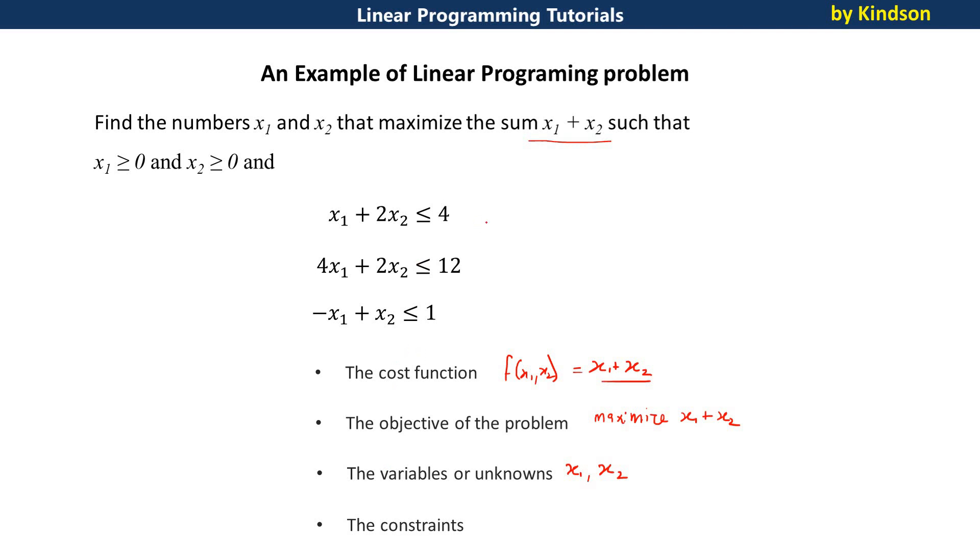So what else do we have? We have the constraints. What are the constraints? The constraints are c1, c2, c3, c4, c5. So we have five constraints. These two constraints, c4 and c5, they are special constraints and they are called non-negativity constraints. For most problems, you will always see these constraints in addition to other constraints. So this is how to break down a linear programming problem.